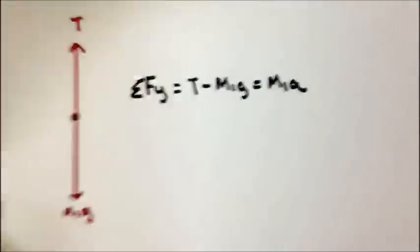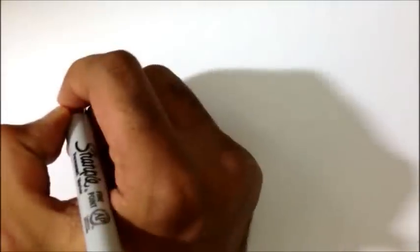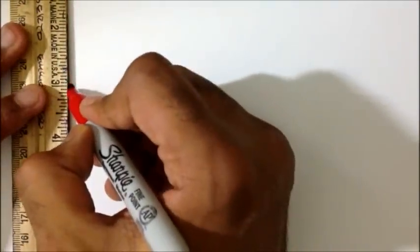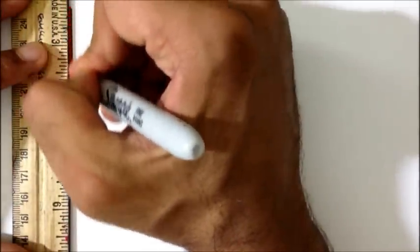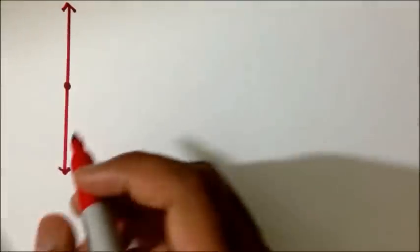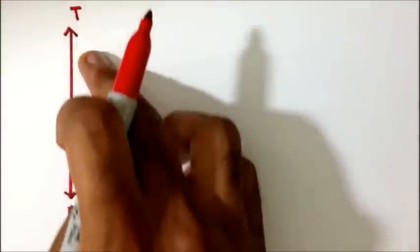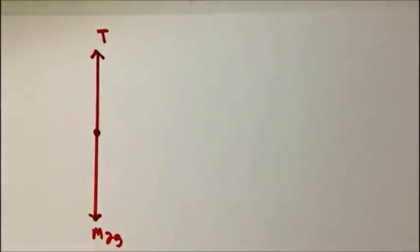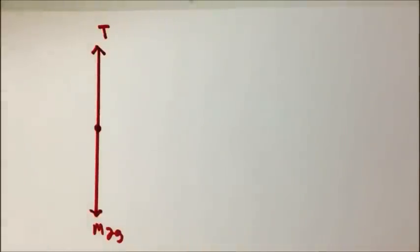Now let's go to mass M2 and draw a free body diagram. For mass M2, represented as a dot, we have the gravitational force or weight M2g coming from the center of gravity, and the tension T acting upward. The tension T is equal in magnitude to the tension on M1's side because the Atwood's machine does not exhibit any friction, meaning the tension and acceleration will be the same in both cases.